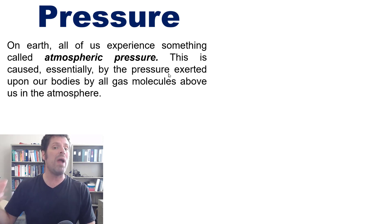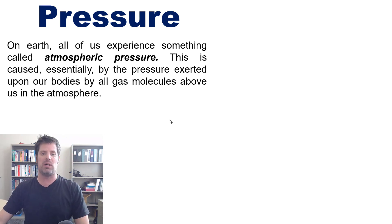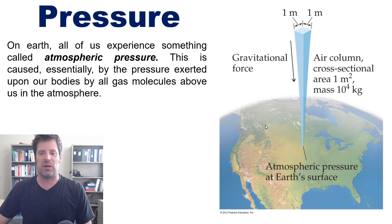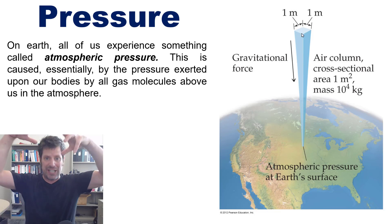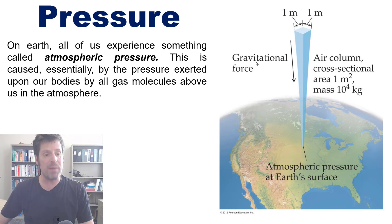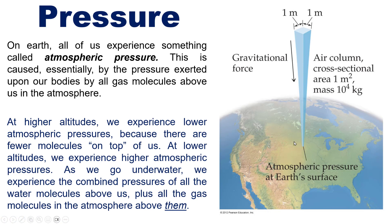On Earth, all of us experience atmospheric pressure — caused essentially by the weight exerted upon our bodies by all of the gas molecules above us, all the way to the outer atmosphere. If you were standing in the middle of the country, the combined weight of all gas molecules between your body and the outer atmosphere is the atmospheric pressure. At higher altitudes, such as on top of a mountain, you experience lower atmospheric pressure because there are fewer molecules between you and the outer atmosphere. At lower altitudes, we see the reverse — higher atmospheric pressure because there are more molecules weighing down upon us.